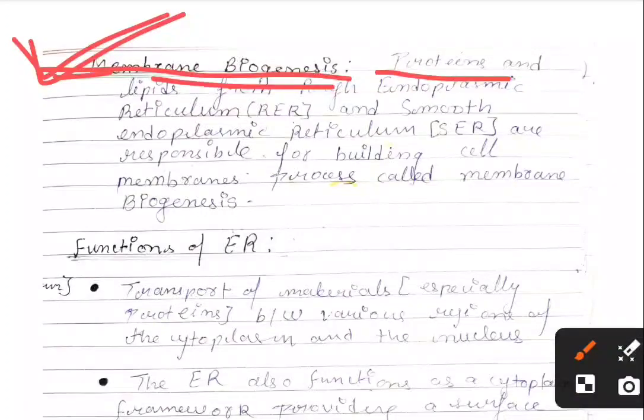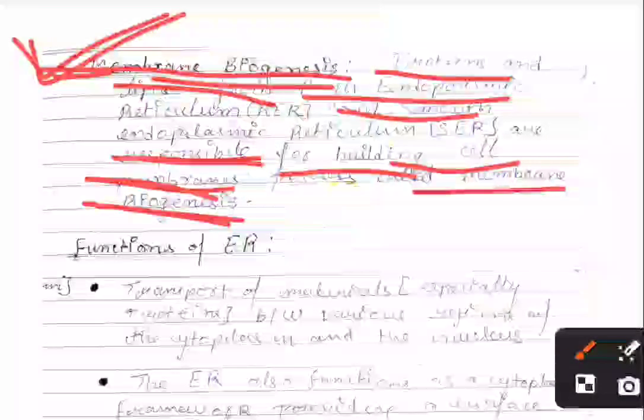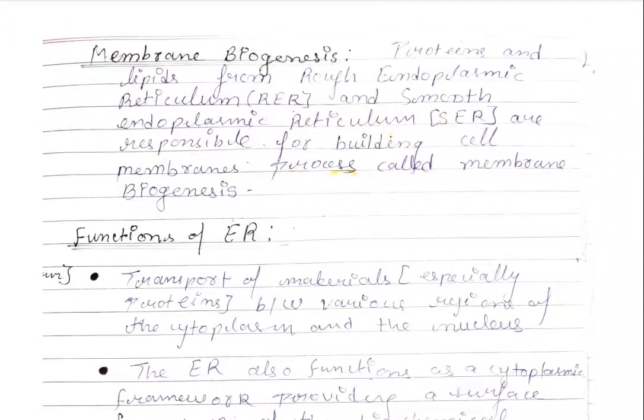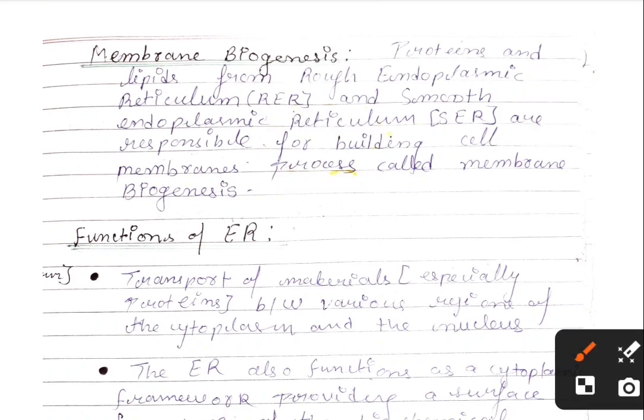Proteins and lipids from RER and SER are responsible for building the cell membrane. This process is called membrane biogenesis. RER synthesizes proteins while SER synthesizes lipids, and both contribute to building the cell membrane.